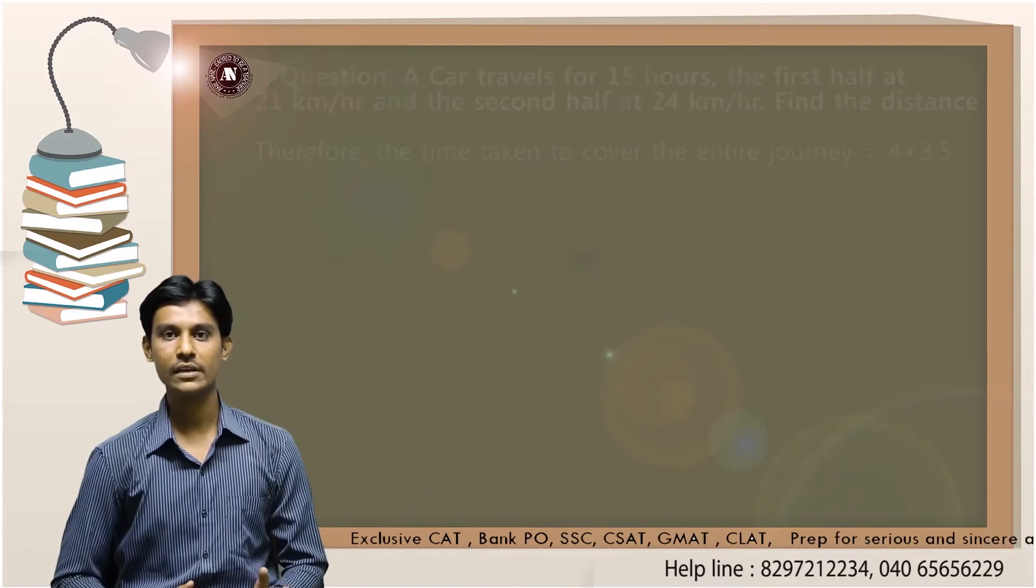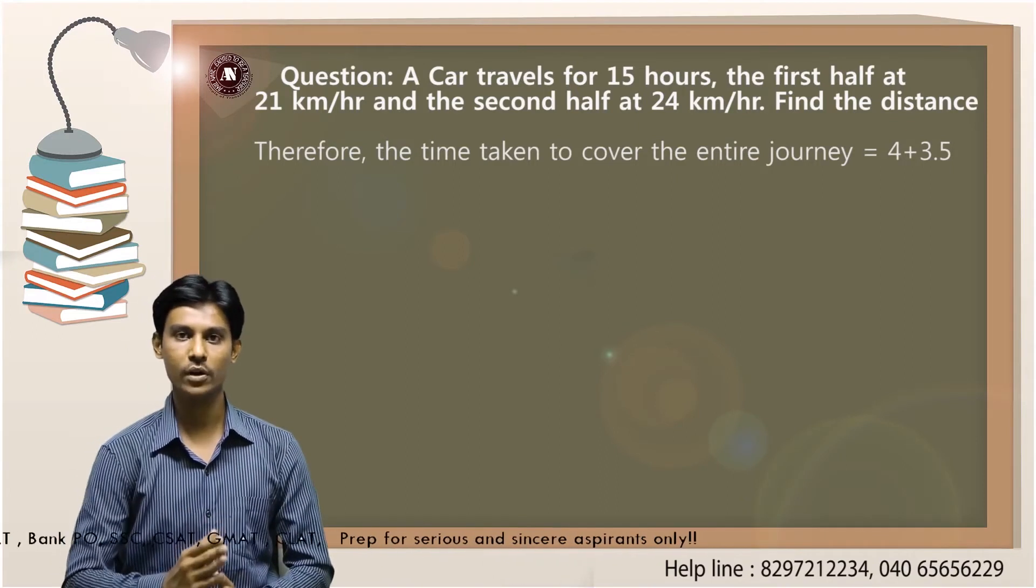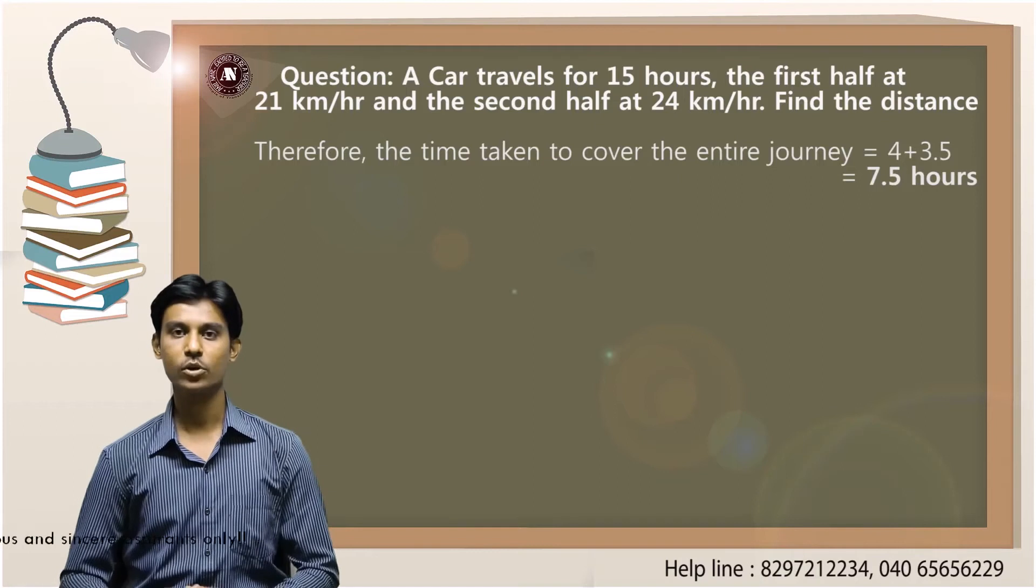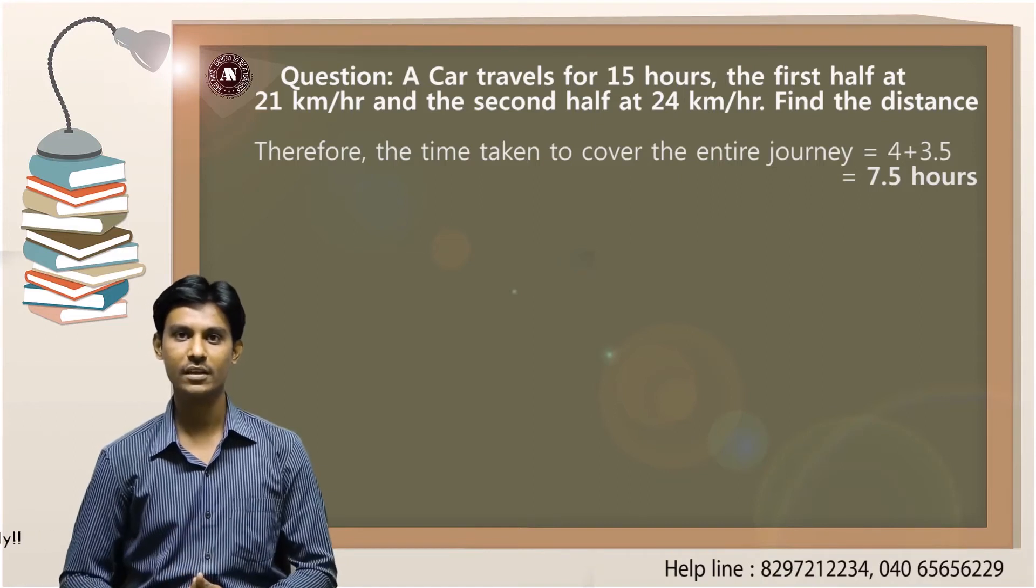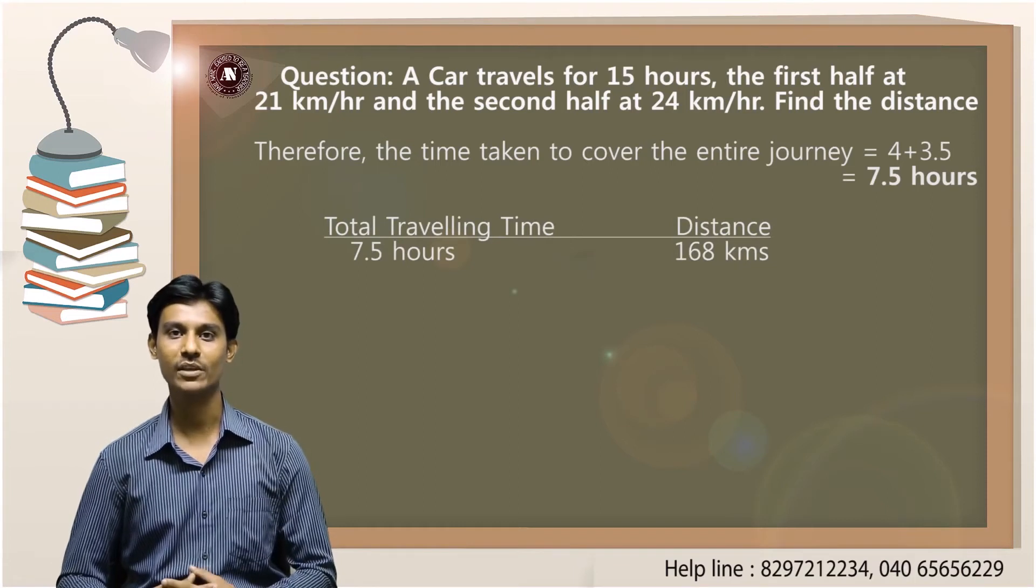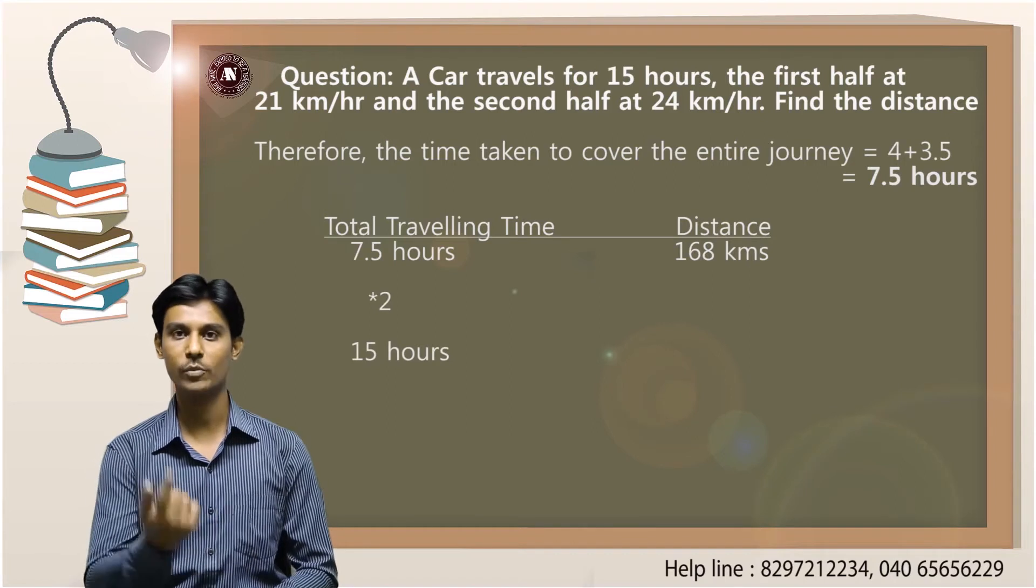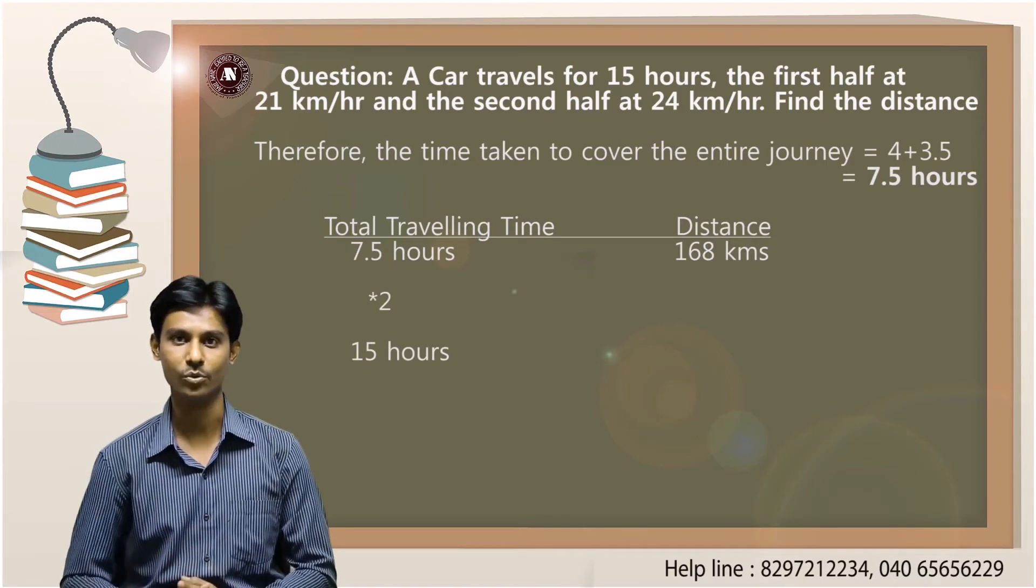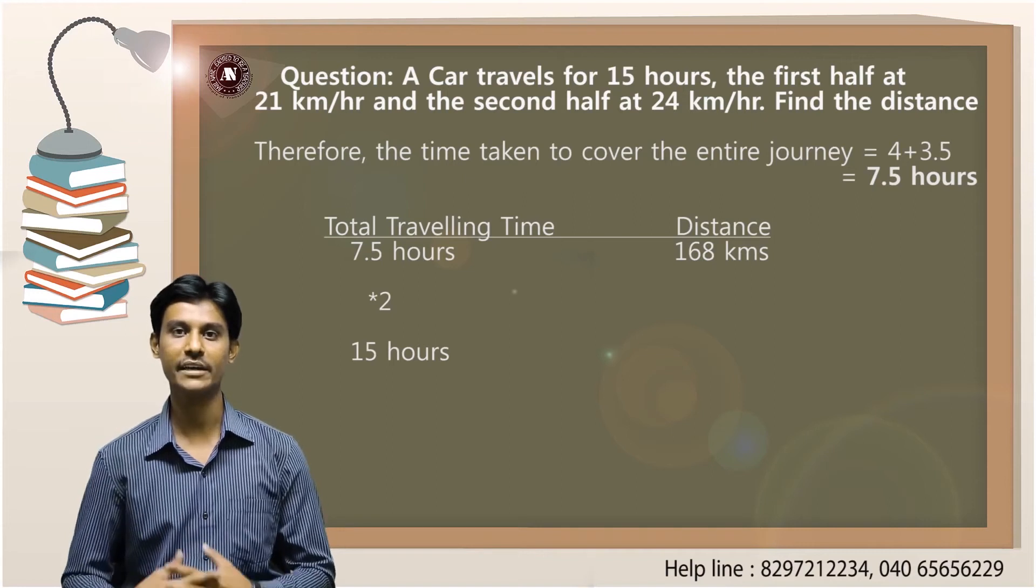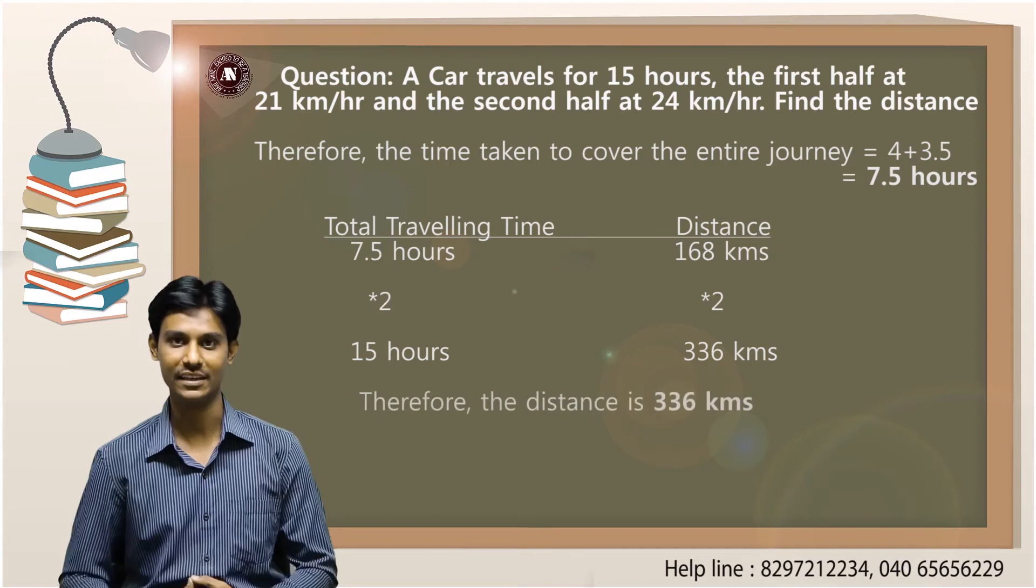Therefore, the total traveling time which includes the first half and the second half is 4 hours plus 3.5 hours, which is 7.5 hours. If my total travel time is 7.5 hours, the distance will be 168 kilometers. But according to the question, the total travel time is not 7.5 hours, it is 15 hours. That means 7.5 should become 15, you should multiply by 2. Similarly, the distance part also should be multiplied by 2. 168 into 2 will become 336 kilometers. Therefore, our answer is 336 kilometers.